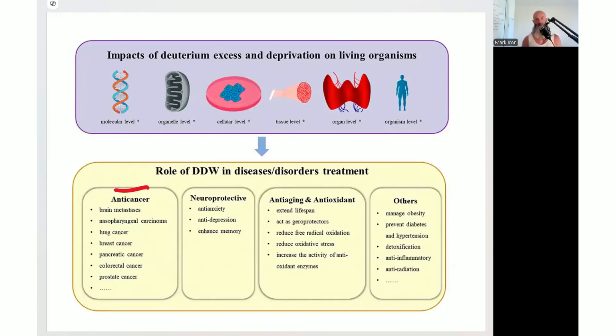When you get your deuterium under control, it has anti-cancer properties: brain metastases, lung, breast, pancreatic, colorectal, prostate. Then it helps your brain, neuroprotection, anti-anxiety, depression, enhances your memory, your moneymaker to create wealth. What about anti-aging? You don't want to wrinkle and have cellular aging go out of control. You want to have a powerful antioxidant system. Extends lifespan, protects your DNA, reduces oxidative stress, and increases the amount of enzymes to detox.